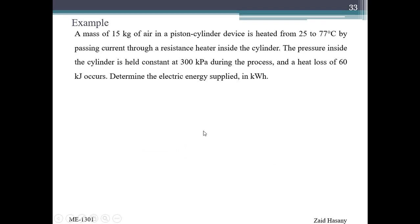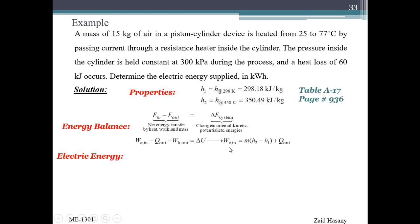The problem says a mass of 15 kg of air in a piston-cylinder device is heated from 25 to 77 degrees Celsius by passing current through a resistance heater inside the cylinder. We have 15 kg of air as the working substance in a piston-cylinder device which will do boundary work as the volume tends to increase.